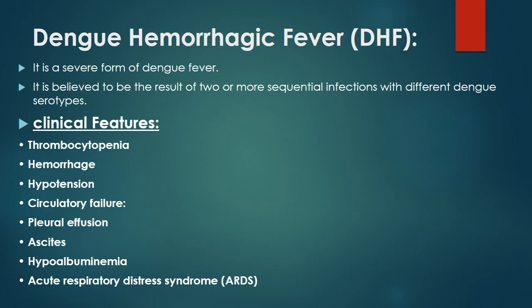Hypotension may occur and is associated with tachycardia and raised hematocrit. Raised hematocrit is an important feature of dengue hemorrhagic fever. Circulatory failure may lead to third spacing, causing pleural effusion, ascites, hypoalbuminemia, and acute respiratory distress syndrome.